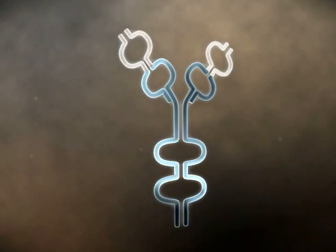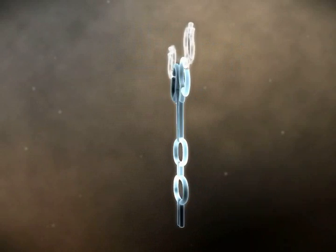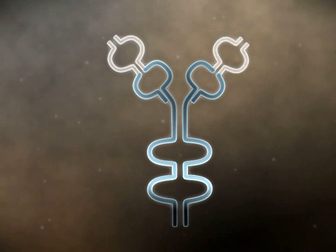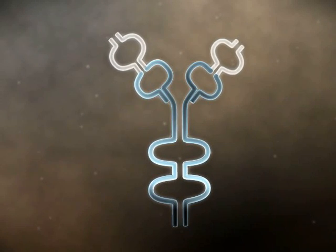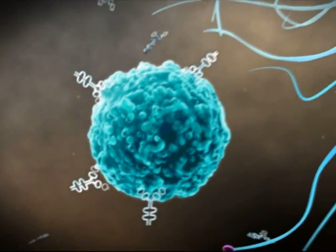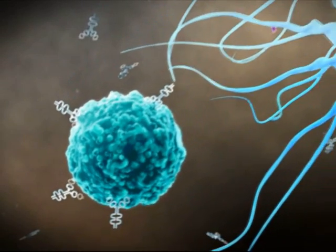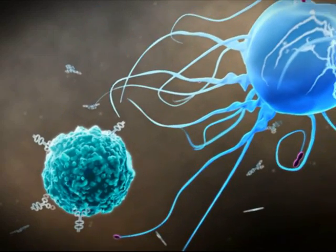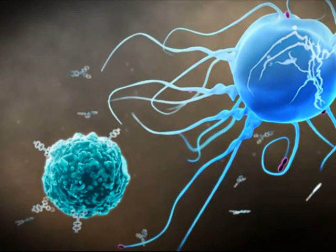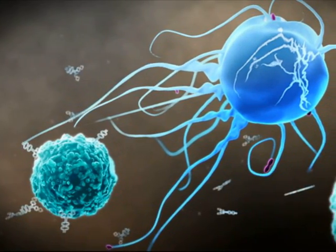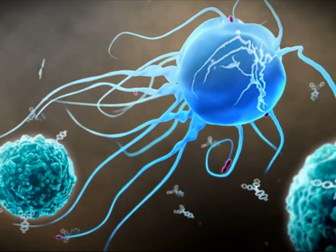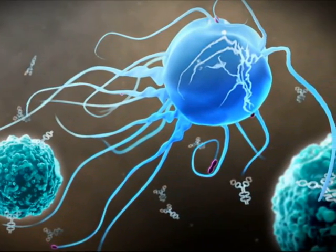It is hypothesized that rituximab works through numerous candidate mechanisms, which vary depending on how the disease is expressed in each patient. The first mechanism of B cell deletion is antibody-dependent cellular cytotoxicity, or ADCC, where an antibody-coated target cell is directly killed by an effector cell expressing FC receptors.